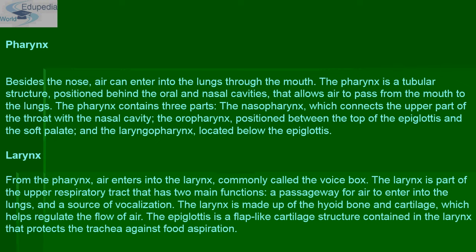Then comes the larynx. From the pharynx, air enters the larynx, commonly called the voice box. The larynx is part of the upper respiratory tract with two main functions: serving as a passageway for air to enter the lungs, and as the source of vocalization. The larynx is made up of the hyoid bone and cartilage, which help regulate airflow. The epiglottis is a flap-like cartilage structure in the larynx that protects the trachea against food aspiration.